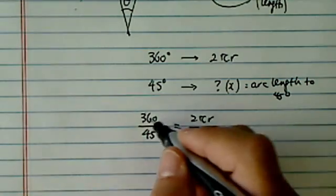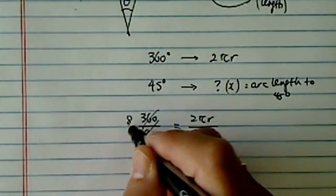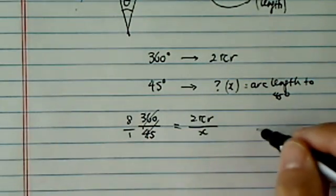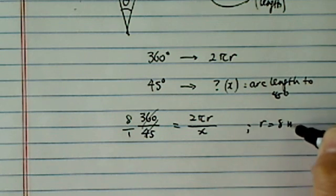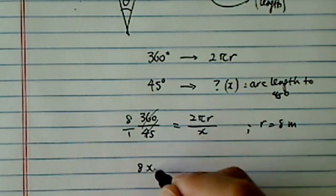Okay. From here, we can cancel here. This happened to be 8. And let's say we were given r is equal to 8 meters. Then let's just write it out. So you have 8x.